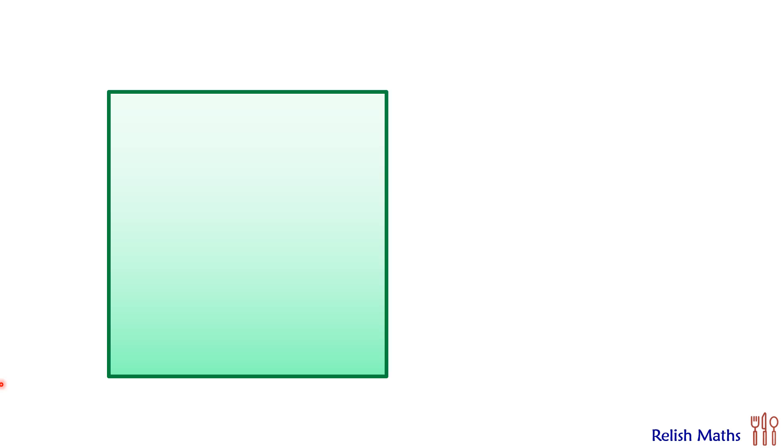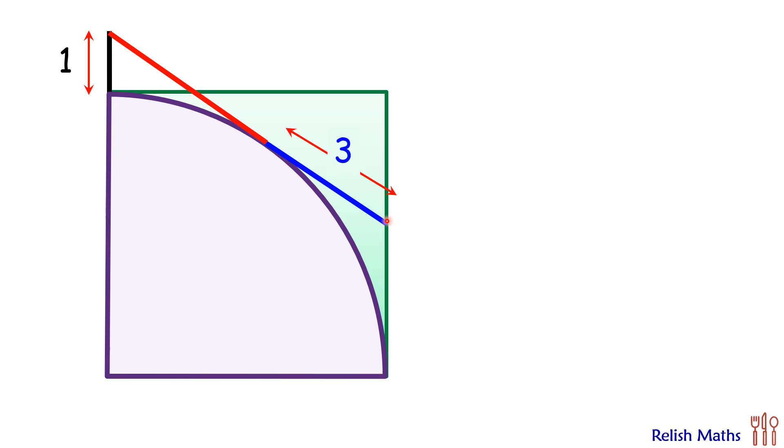Welcome everyone to this interesting question. Given is a square with a quadrant inscribed in it. The left side of the square is extended by a length of 1 centimeter. From this top point, a tangent is drawn to the quadrant. If the length of the blue line segment is 3 centimeters, using this limited data we have to find the radius of the quadrant.